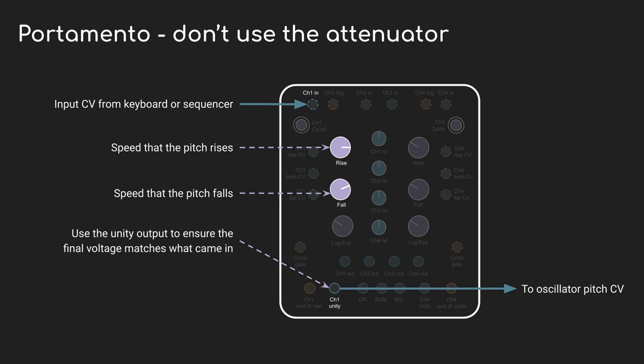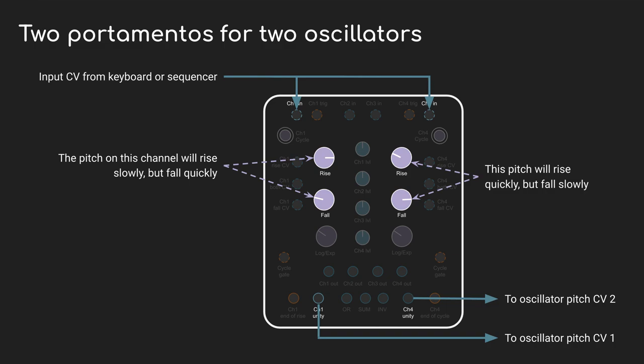Since I already did portamento in a previous video, I want to do something a little more interesting. I'm going to take the same incoming pitch CV from a sequencer but process it twice separately. On channel one I'm going to slew the voltage as it rises, and on channel four I'm going to slew it as it drops. Then I'm going to run them into two oscillators that are otherwise tuned together. Especially as the pitch changes a large amount, you can hear them diverge and come back together.